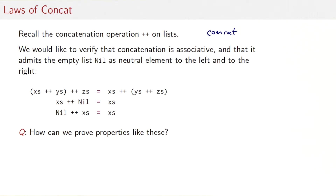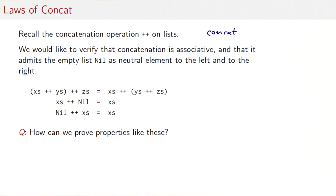That means for any list Xs, Xs followed by nil is Xs, and nil followed by Xs is again Xs. The question is, given properties like these, how can we prove them? The answer is by a new proof principle we are going to introduce now, which is called structural induction on lists.